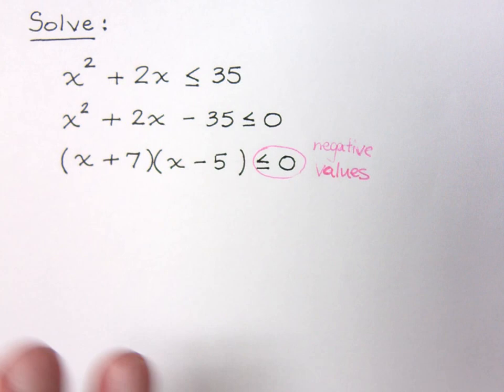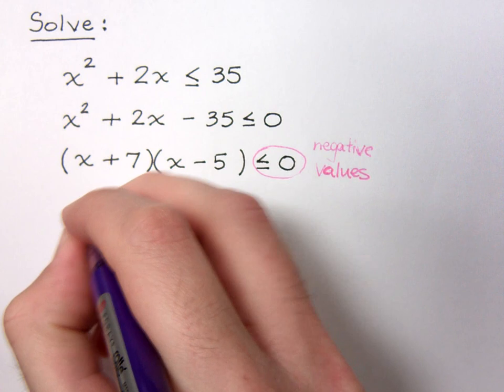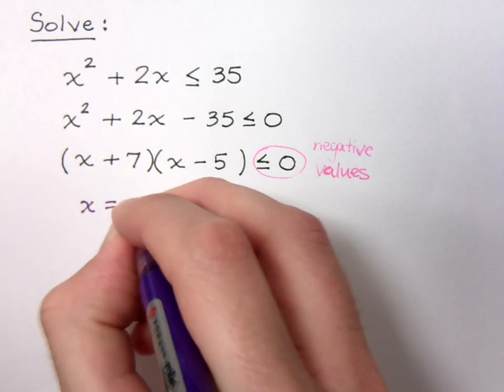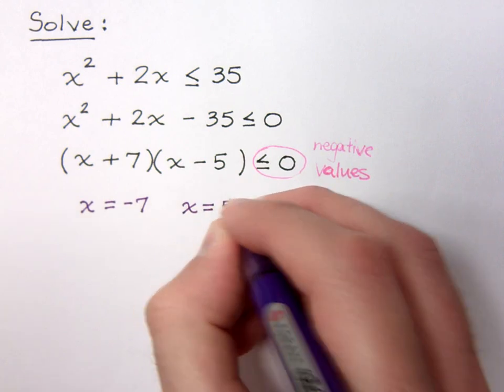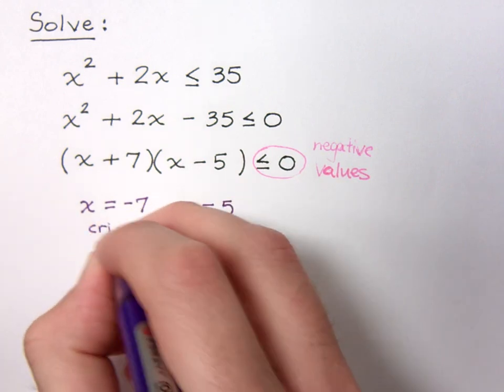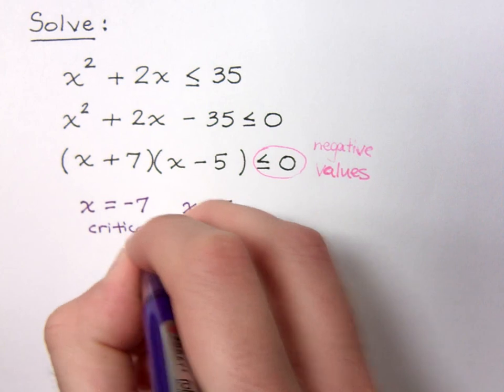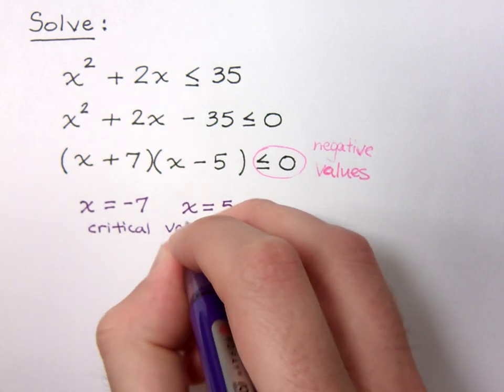So this is where we kind of stop looking at this as though it's a quadratic equation, and we just start trying to figure out what those critical values are. So from here, one critical value is when x equals negative 7, and the other critical value is when x equals positive 5. So these values of x, what I'm referring to as my critical values or my critical numbers.